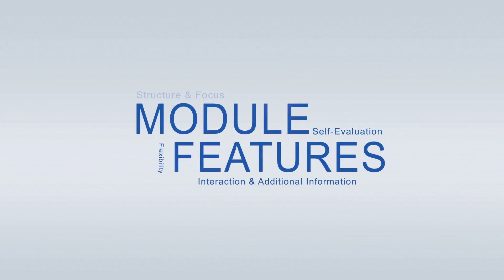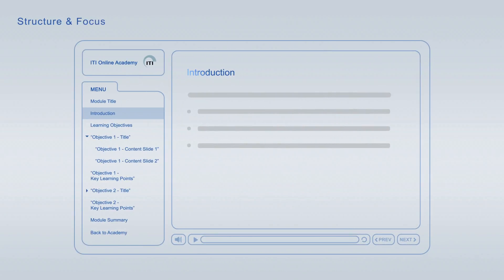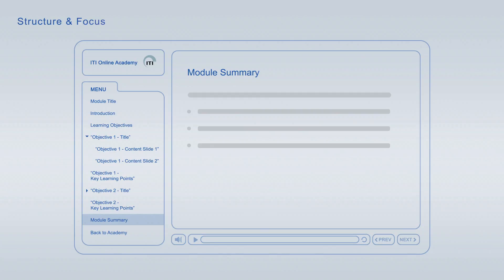ITI Online Academy Learning Modules offer a wide variety of features to optimise your learning. Every module starts off with an introduction, followed by the learning objectives, giving you an overview of the main topics and learning goals covered. Each of the learning objectives is discussed in an individual topic chapter that concludes with a list of its key learning points. The summary at the end of each module combines the major key learning points across all learning objectives for final repetition and focus.